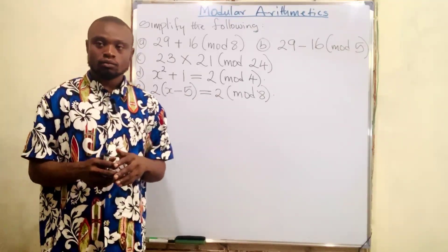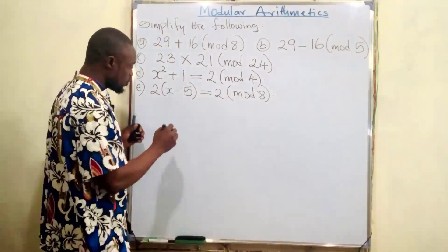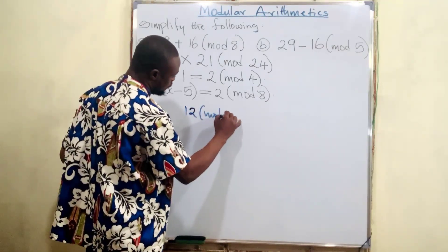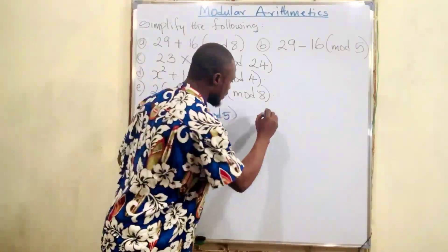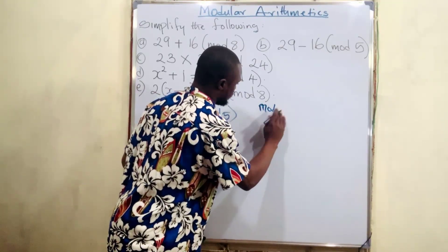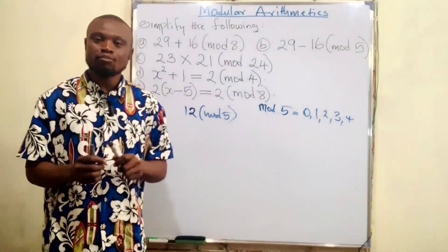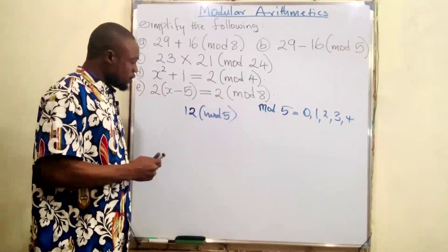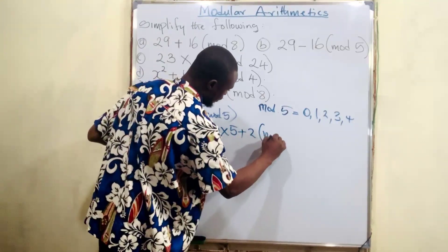If you're given a question, how do you go about solving it? Let's say you're given 12 mod 5 — you want to find 12 in mode five. If you recall, the numbers in mode five are zero, one, two, three, and four. The highest number in mode five is four, so there is no five in mode five.